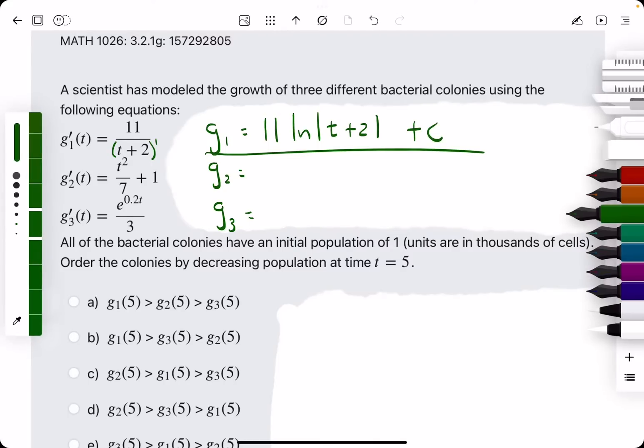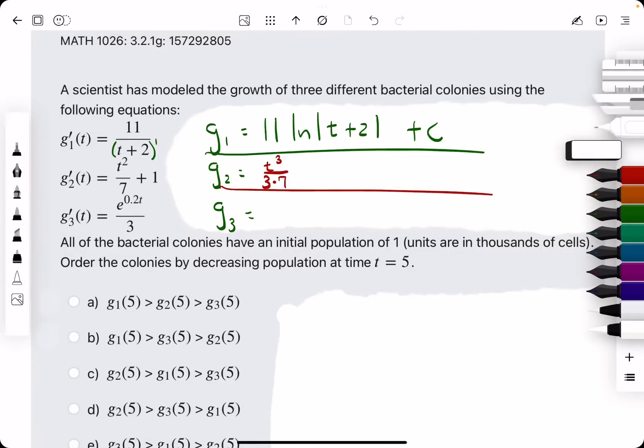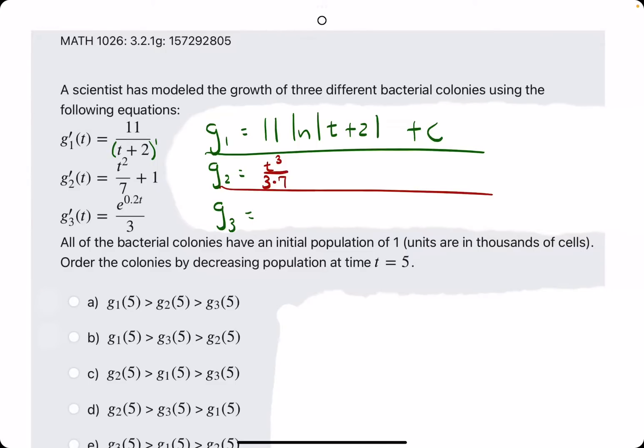Then for the second g function, we have t squared, which has an anti-derivative of t cubed over 3, and then the 7 that's on the bottom will stay on the bottom. When we have 3 and 7 on the bottom being multiplied, the result is 21, and then plus 1 will go to plus t, and then plus c.